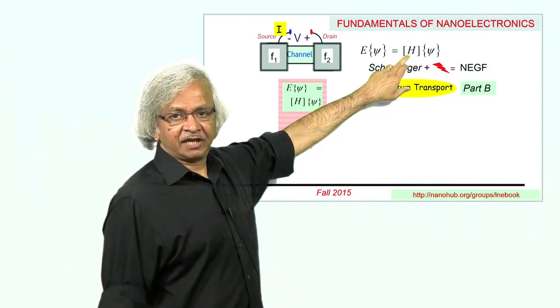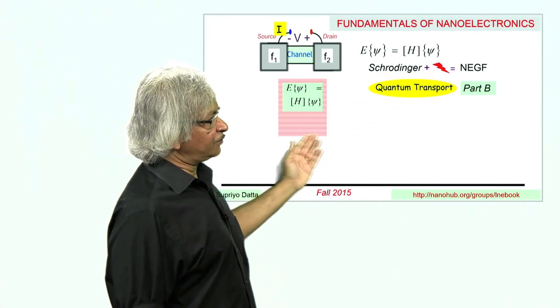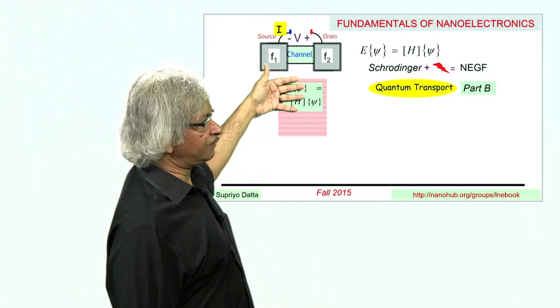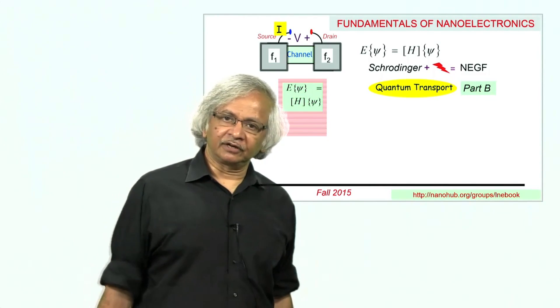We'll discuss this matrix H, which describes the electronic highway and tells you the energy levels available for electrons to flow.